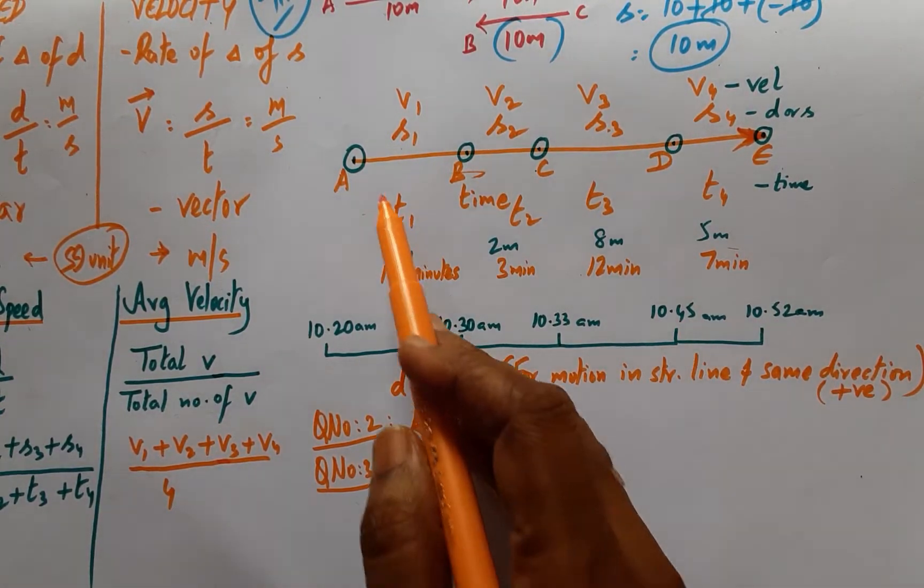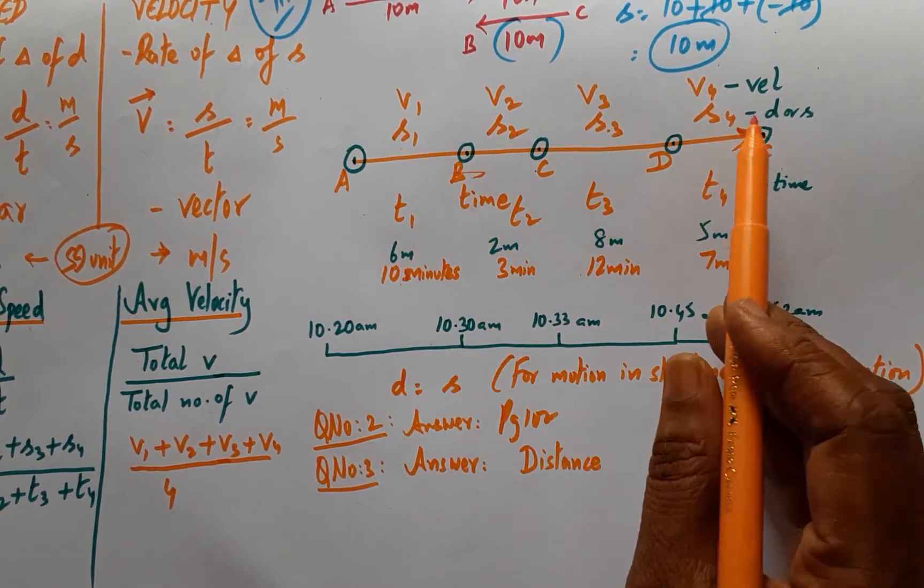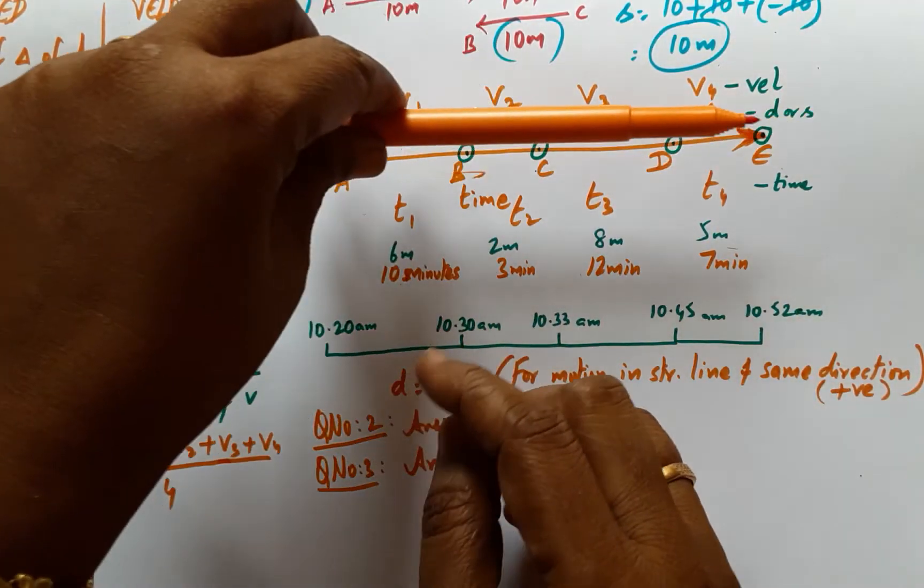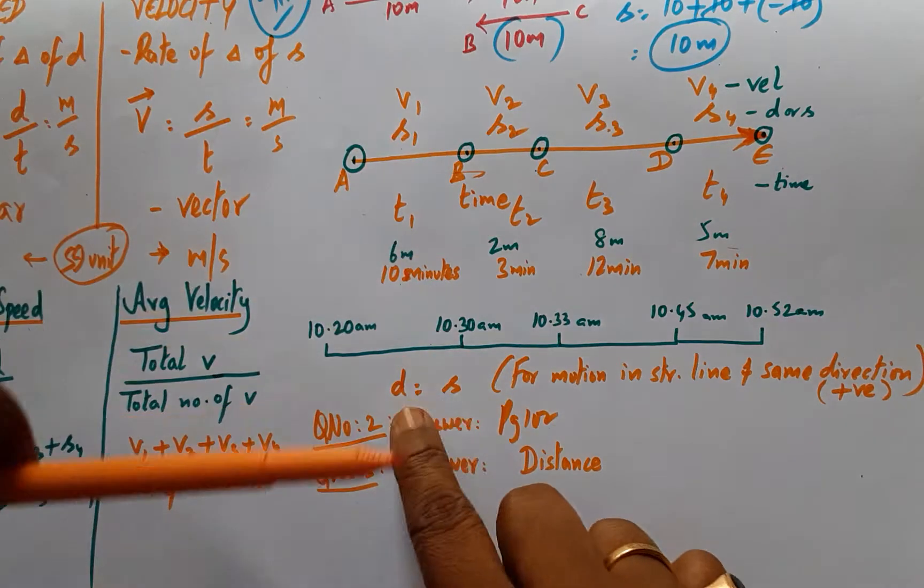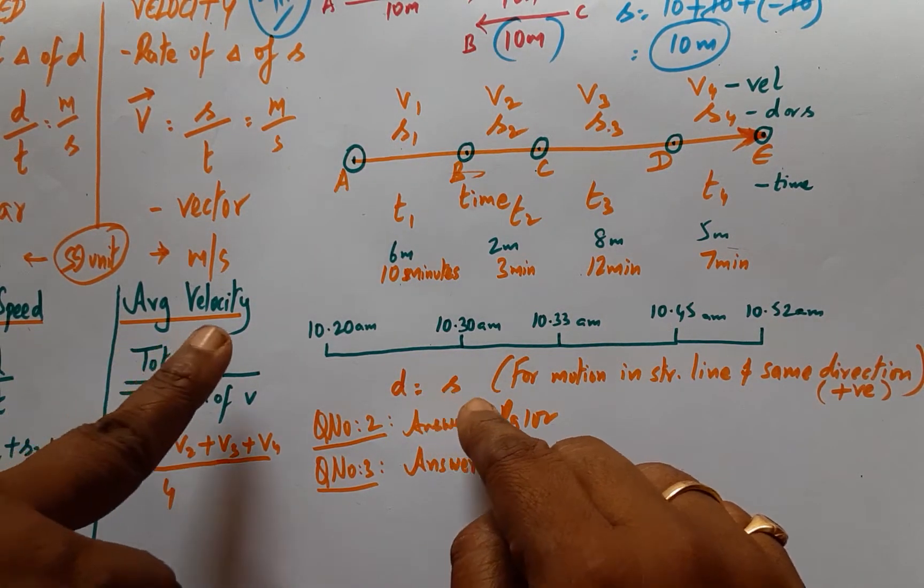The answer is quite simple. As long as the body is moving in a fixed direction along a straight line, there is no change in the value of distance and displacement. They are one and the same, and therefore speed will be equal to velocity.